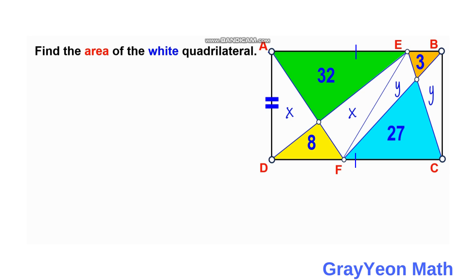Next, I want to label segment AE as small letter a, segment DF as small letter b, segment EB as small letter c, and segment FC as small letter d. Comparing the yellow and green triangles, they have three sets of congruent angles: vertical angles, alternate interior angles, and a third pair — making these two triangles similar via AAA angle similarity.